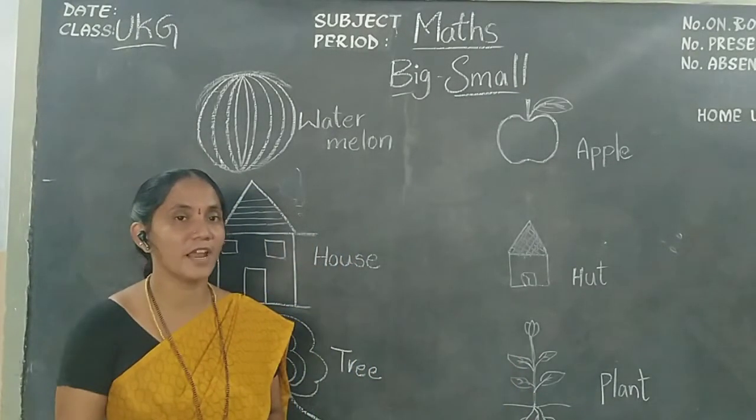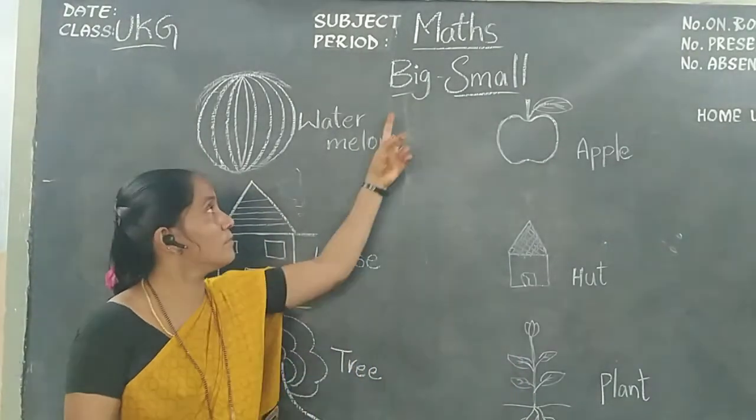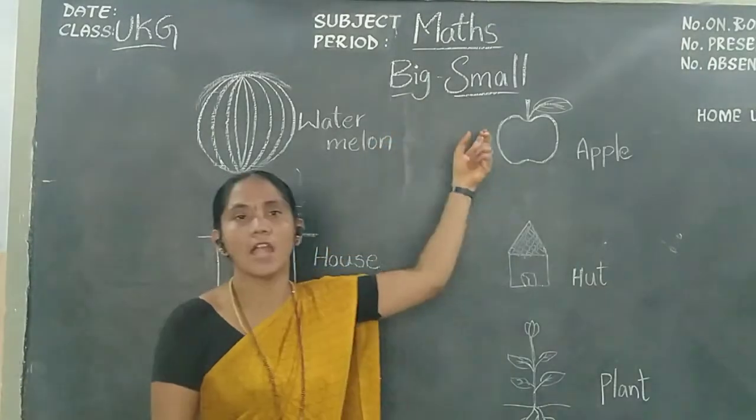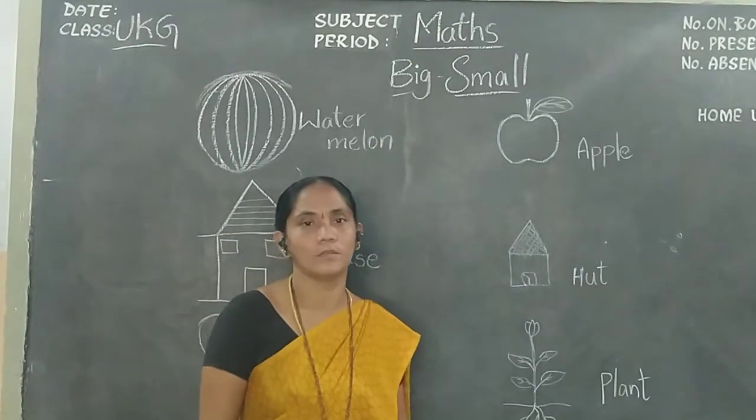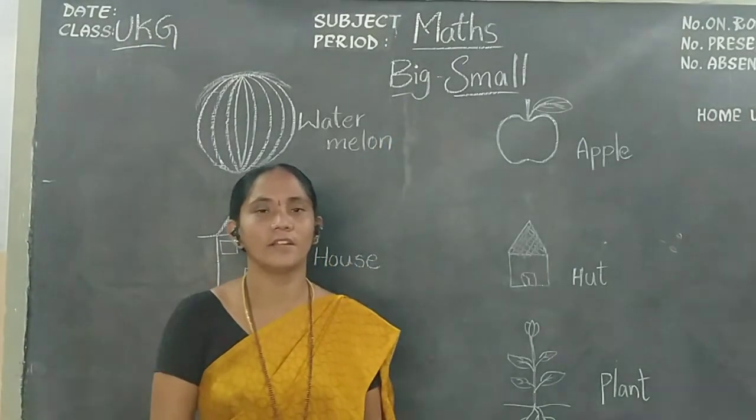Okay, children? You use big and small. Okay, children? Thank you.